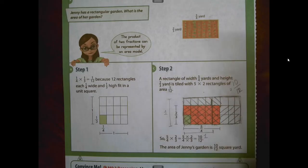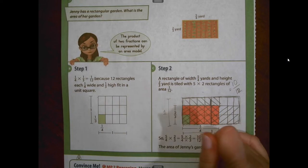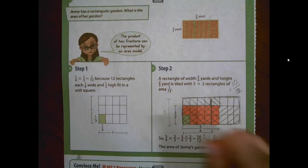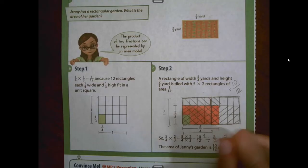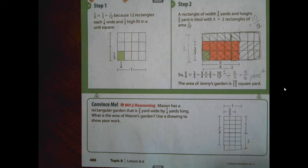So that's where we get 10 twelfths, which we know we would simplify and we'd actually simplify it by two halves, a form of one. 10 divided by two is five. 12 divided by two is six. So in simplest form, we really have five-sixths square yards.